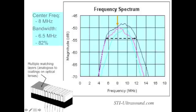Broad frequency bandwidths are made possible by the effect of the damping layer of the transducer. When a pulse is dampened, a wide range of frequencies are contained in each single pulse transmitted by the transducer. This range of frequencies within the pulse is referred to as the frequency bandwidth. Heavy damping results in shorter pulses and broader frequency bandwidths. Pulses that are not dampened have very narrow frequency bandwidths.